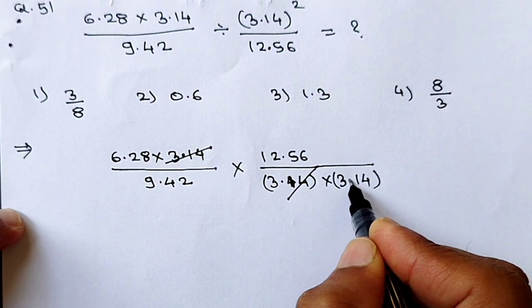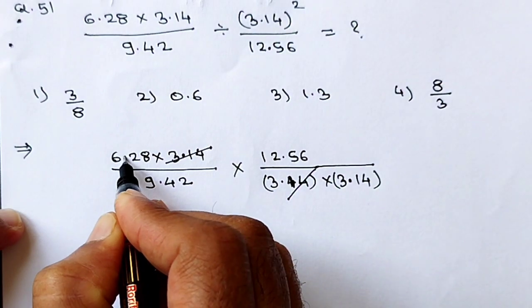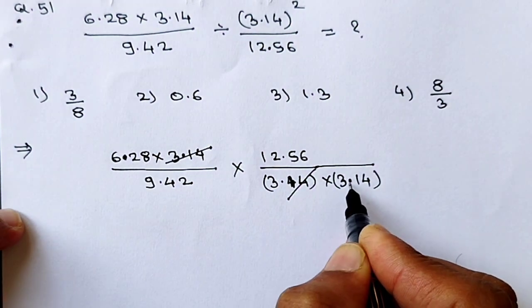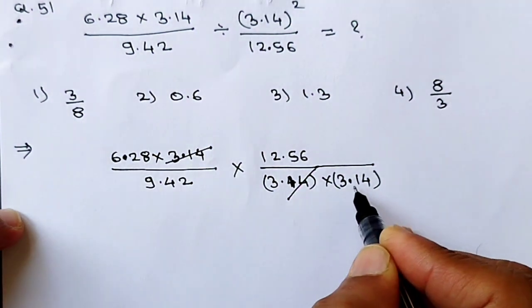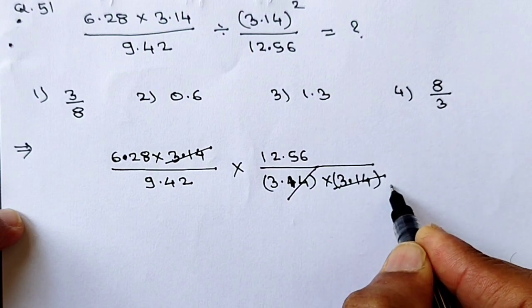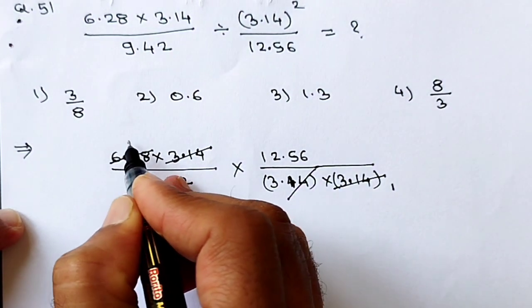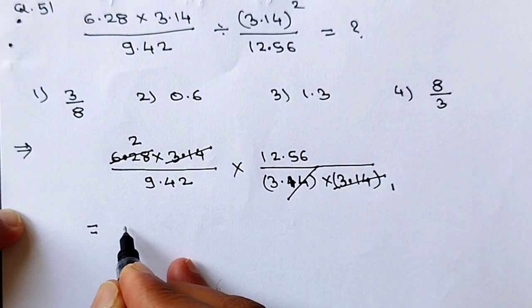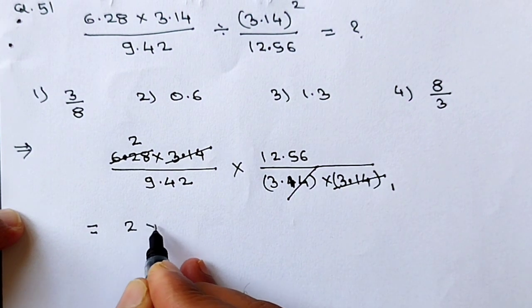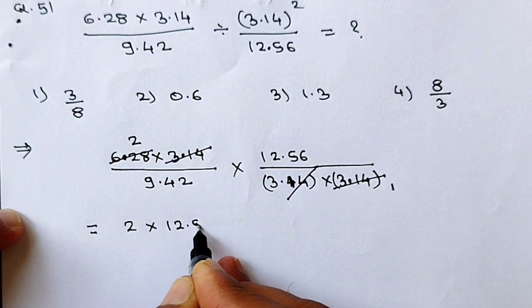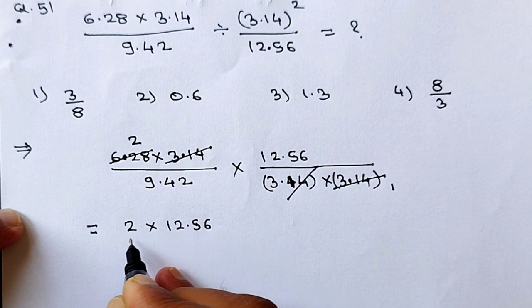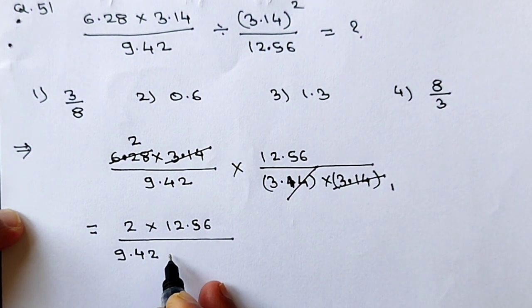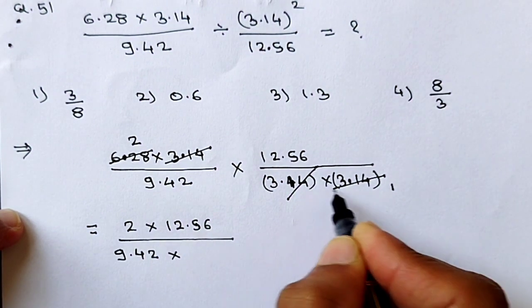See, 3.14 and 6.28 — 6.28 is double of 3.14. So 3.14 × 1 and 6.28 gives us 2. We will get simplified as 2 × 12.56 divided by 9.42 × 1.